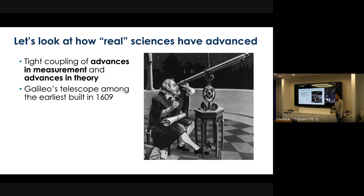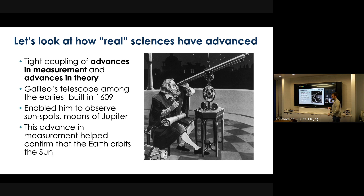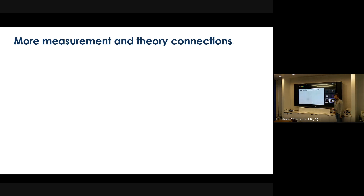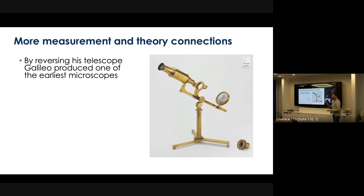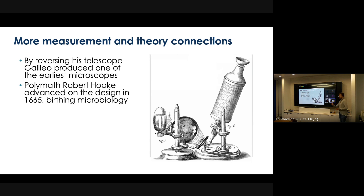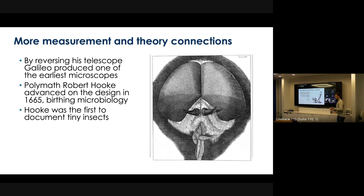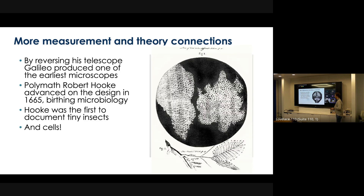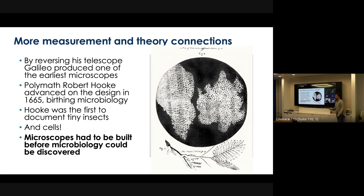Galileo built one of the earliest telescopes in 1609, and through it he was able to observe things that then required theory to reconcile. The advances in measurement allowed us to confirm the heliocentric model. Galileo then turned his telescope around and it became one of the earliest microscopes. These polymaths like Galileo and Robert Hooke were building their own microscopes and using those to advance the field of biology. By building his own microscope, Robert Hooke was able to see tiny insects, document the compound nature of flies' eyes, and find the first evidence of cells. Microscopes had to be built before those advances in theory could take place.